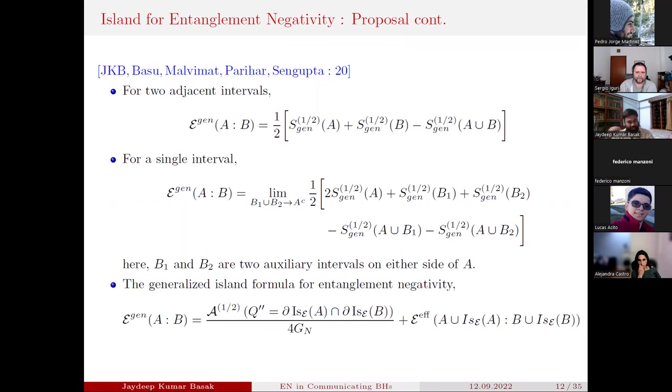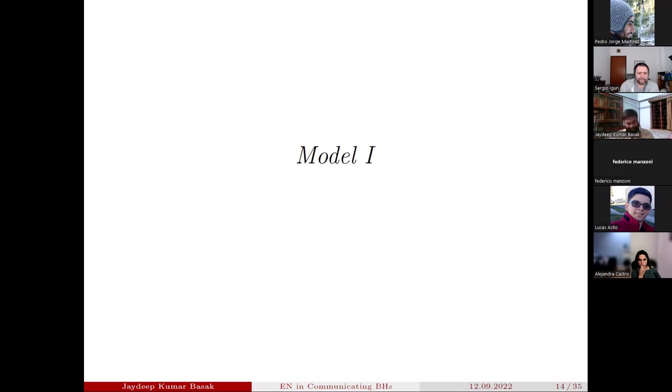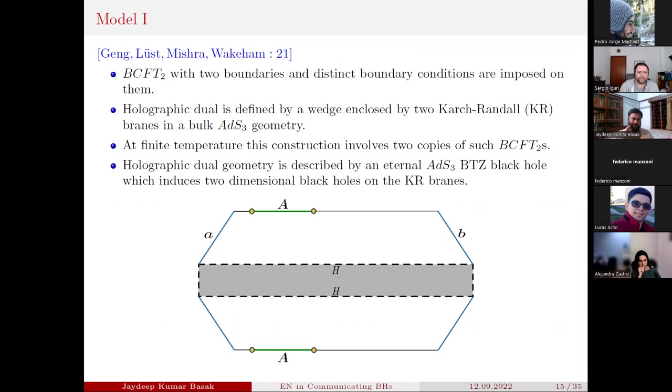When we have the generalized negativity formula, we try to extremize and minimize over the Q'' surface. This Q'' surface is the surface which is basically chopping the total entropy islands for A union B into two parts. We are naming them negativity island A and negativity island B. You can understand that as it is depending on the combination we are taking in the generalized negativity formula, it is not going to be the same as entanglement entropy islands.